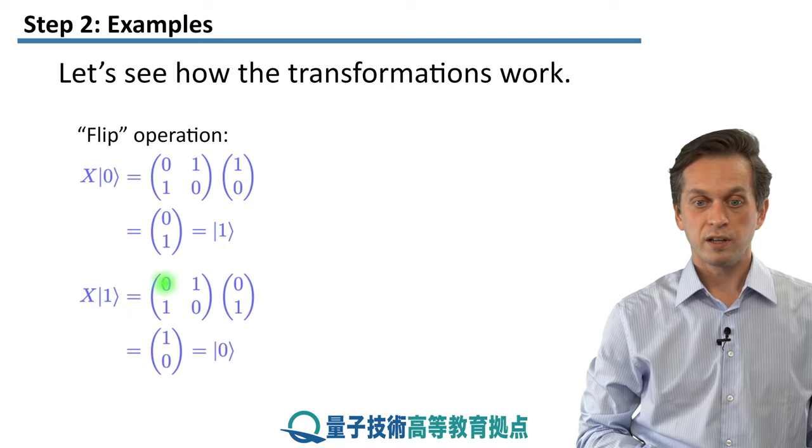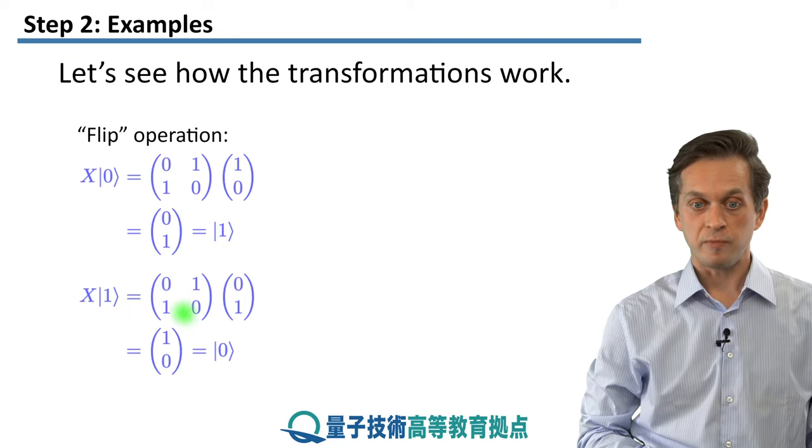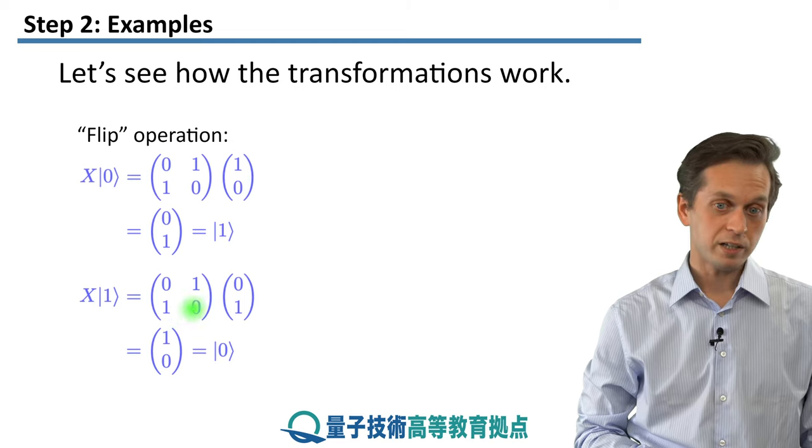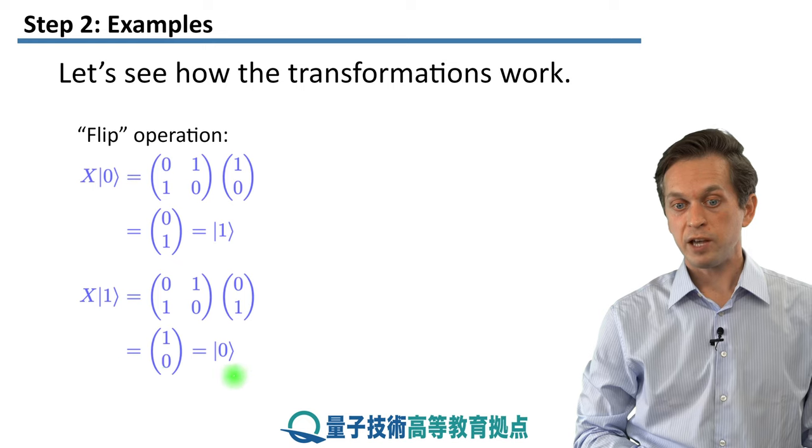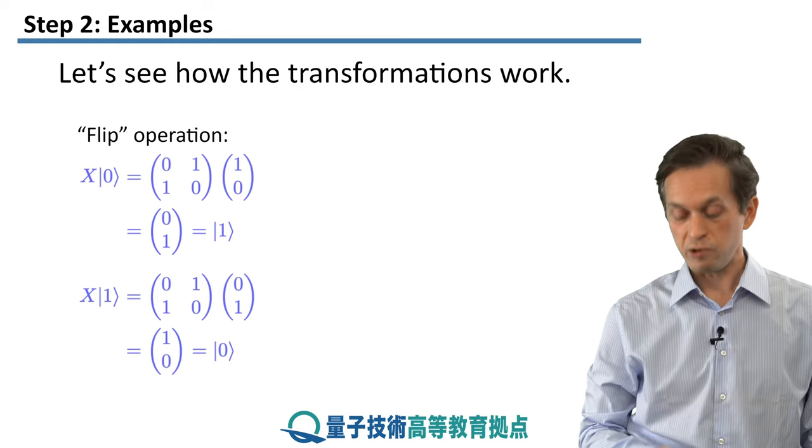So it indeed did flip a 0 into 1 as we would expect. And you can do the same thing for 1. Again, you multiply the matrix representation of the Pauli X operator with the column vector representation of state 1, and you get, as expected, ket 0.